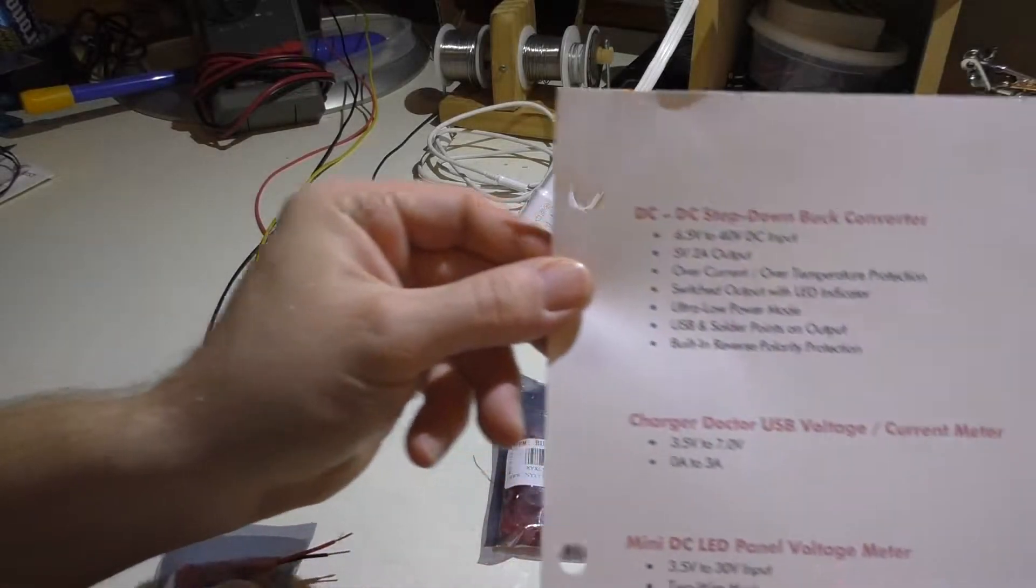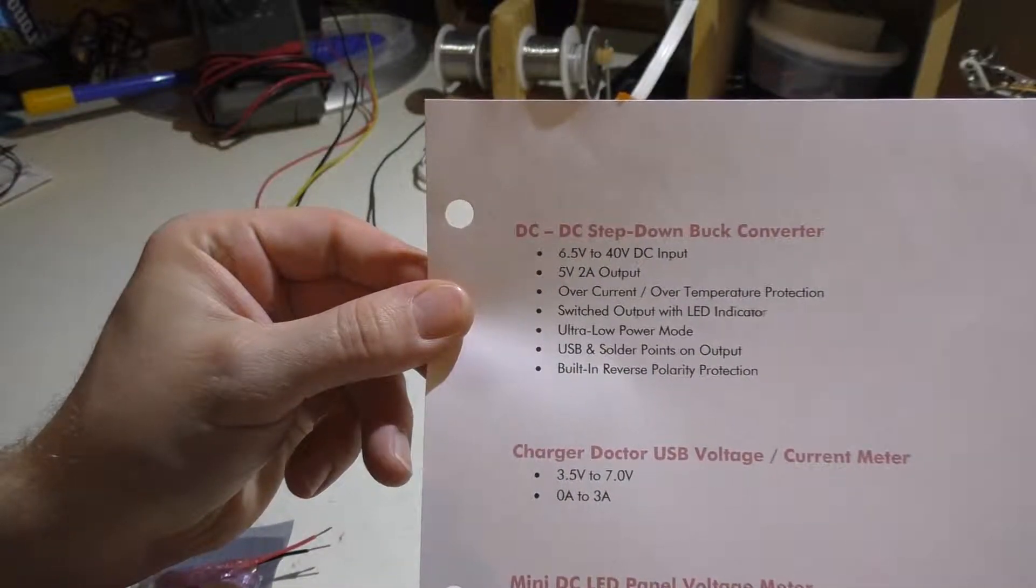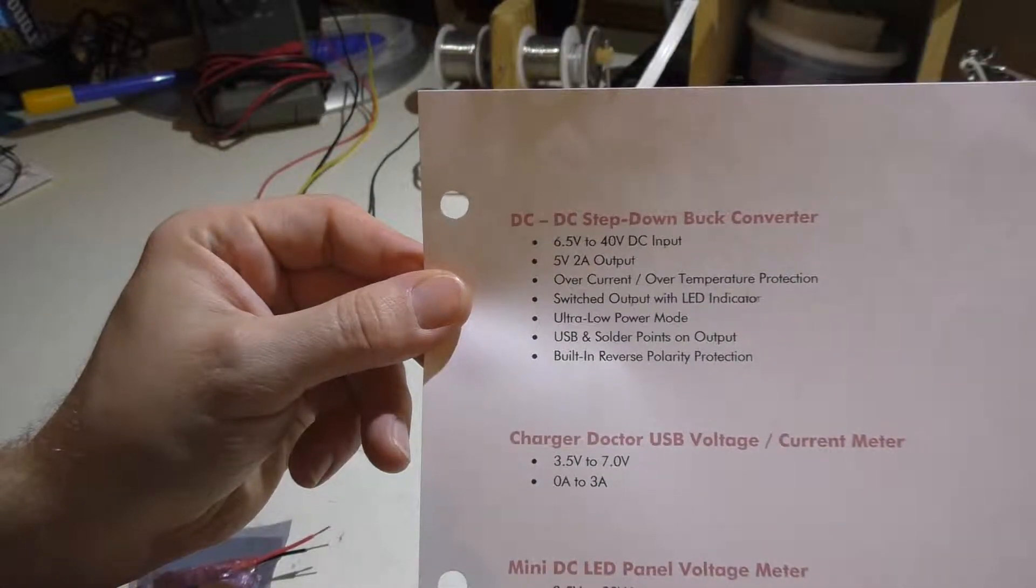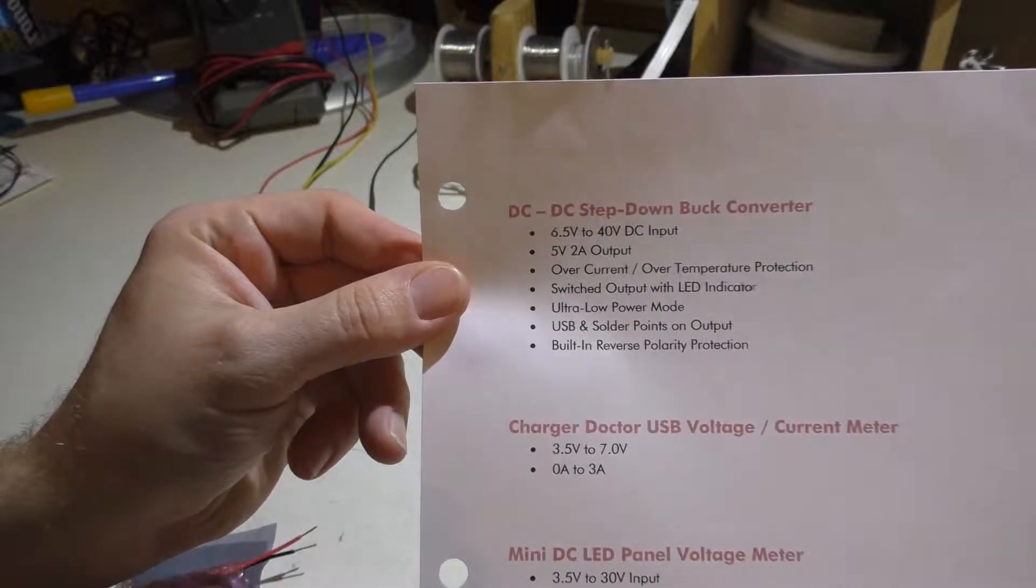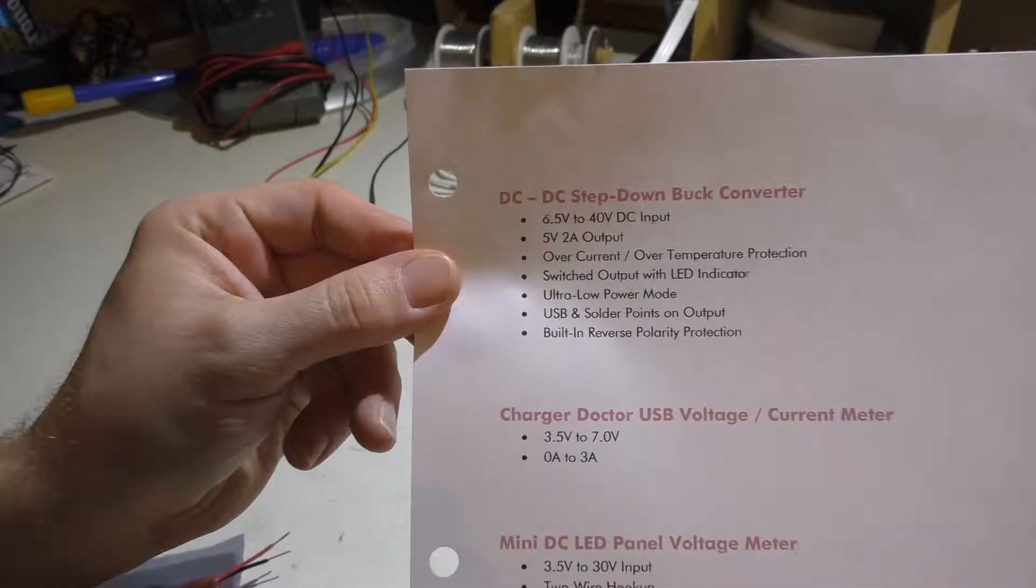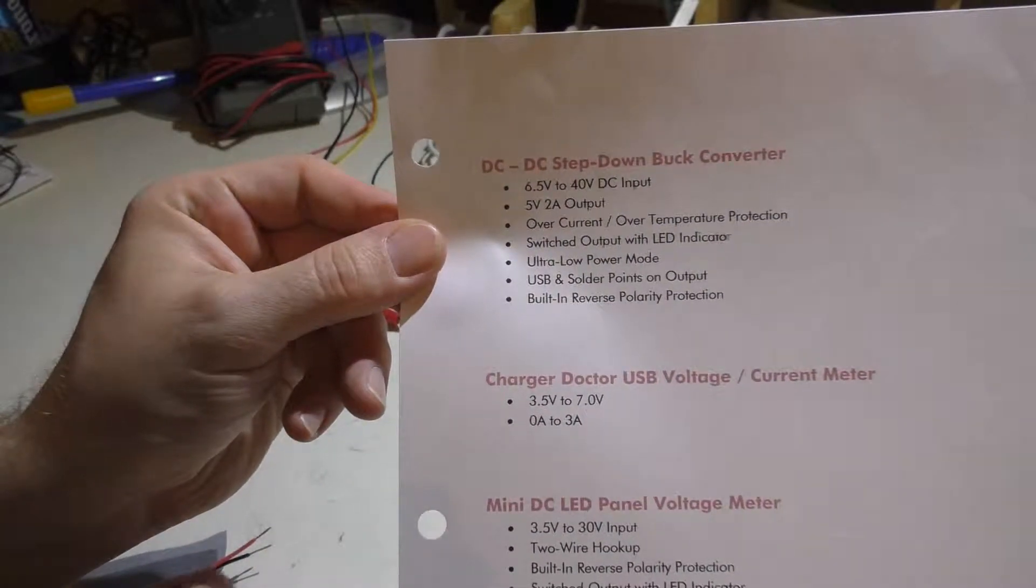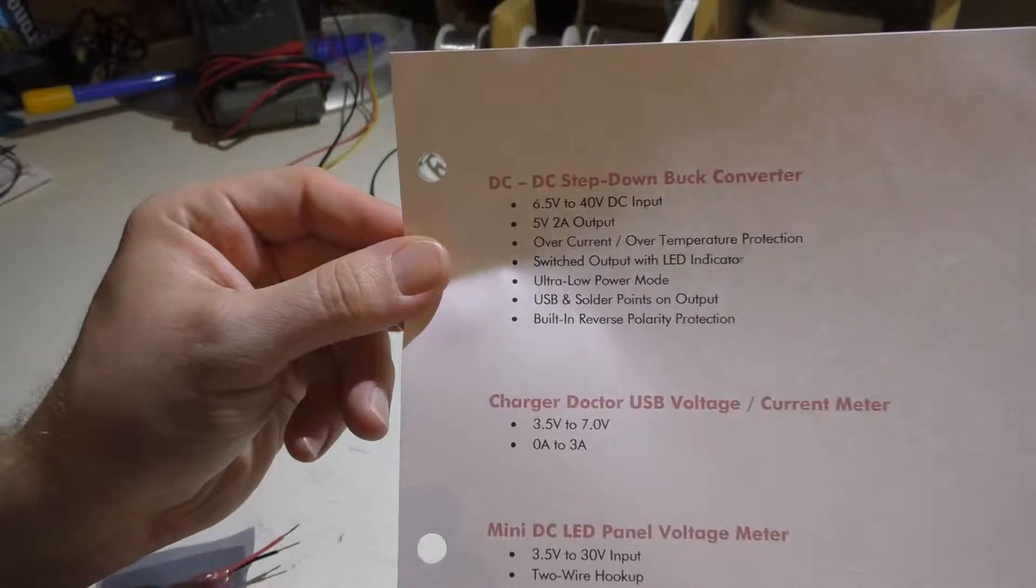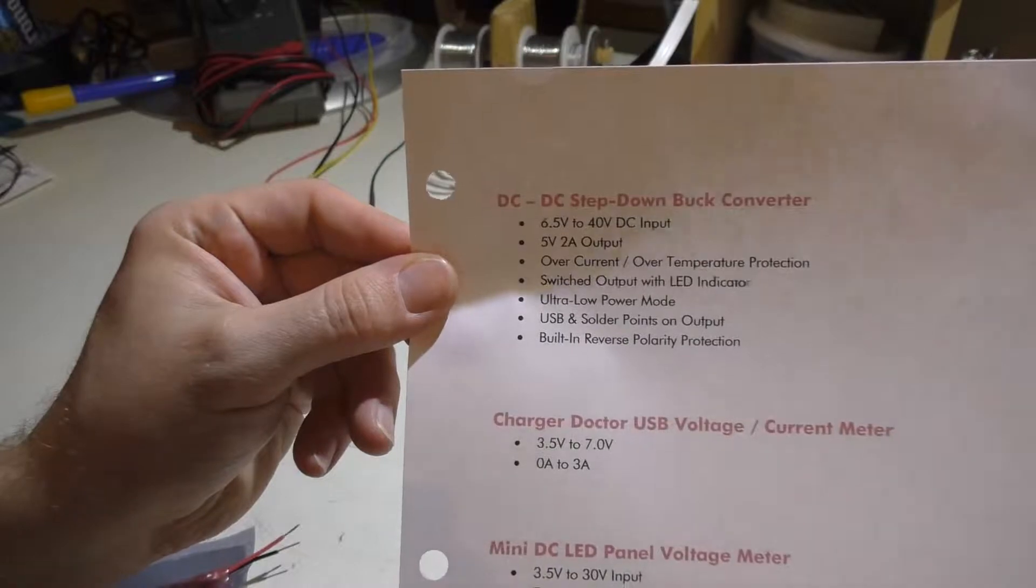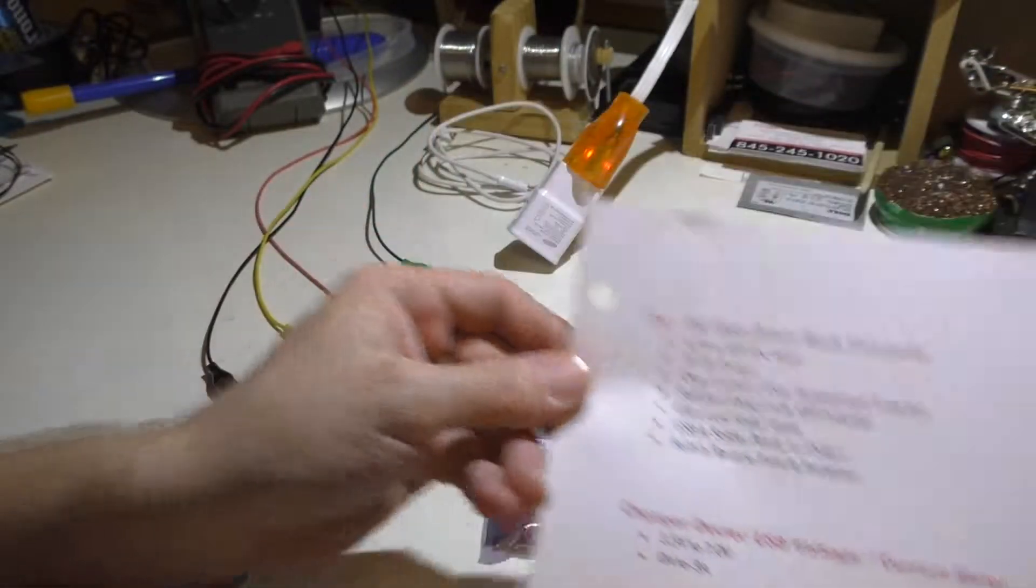Now I'll show you the specs. The first item here is a DC to DC step-down buck converter. It's 6.5 to 40 volt DC input and it gives you a 5 volt 2 amp fixed output. This has over-current, over-temperature protection. It also has built-in reverse polarity. It's ultra-low power mode is basically an off switch to shut the entire unit off. The USB does have an output switch of its own, so you can just shut that off if you'd like.